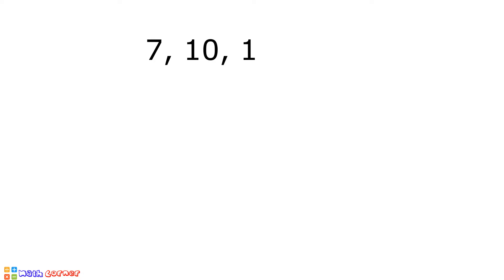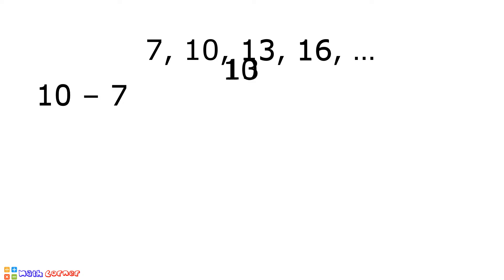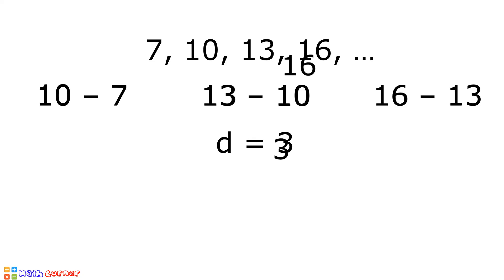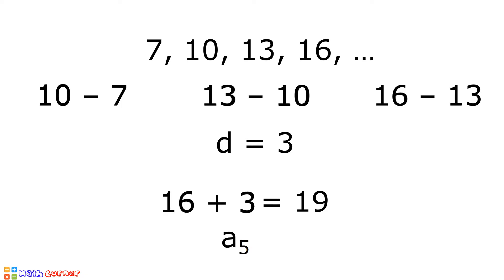Another example: we have 7, 10, 13, 16, and so on. Let us check if there is a common difference by subtracting any two consecutive terms of this sequence. We have 10 minus 7, 13 minus 10, and 16 minus 13. There is a common difference of 3. Therefore, it is an arithmetic sequence. And to determine the next term of this arithmetic sequence, all we have to do is to add the common difference to 16. 16 plus 3 is equal to 19, and 19 is the fifth term of this arithmetic sequence.